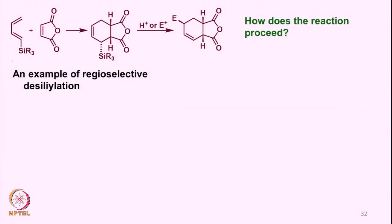If we take a diene of this type where the silicon-carbon bond is attached at the end of the diene, and if we take such a diene, then as you know, a diene and a dienophile undergo Diels-Alder reactions. This is a Diels-Alder reaction with a symmetrical dienophile, so it does not matter which way the diene is oriented. Once the reaction occurs, you can see that the carbon-silicon bond is now alpha-oriented.